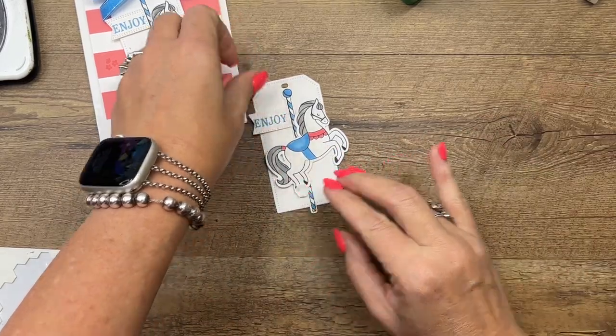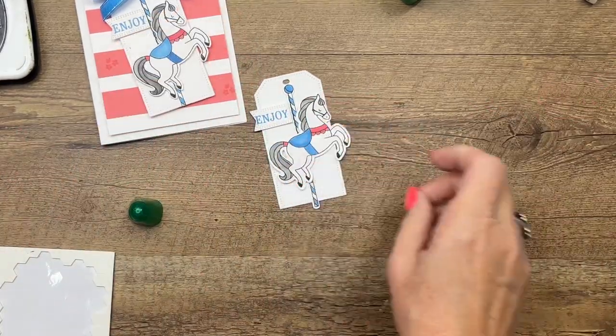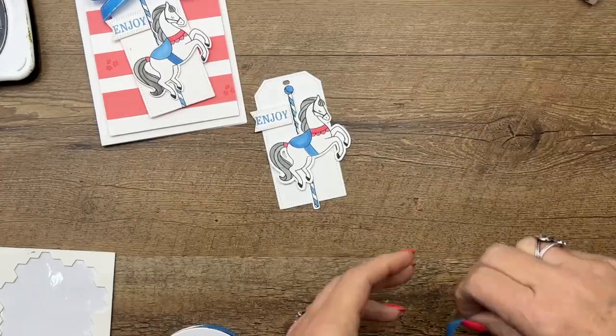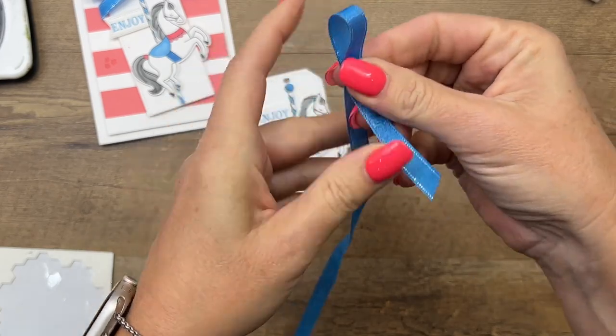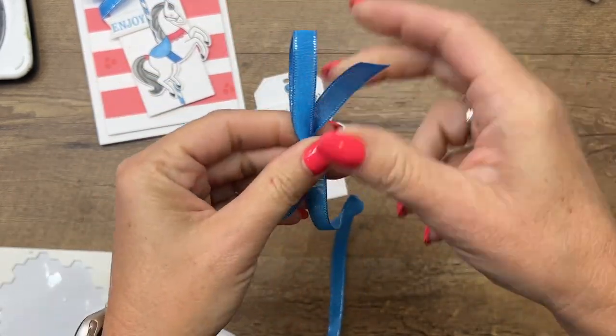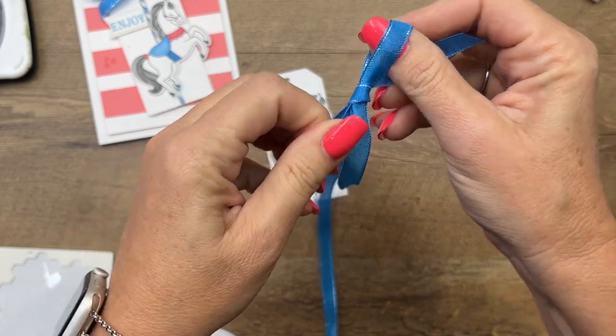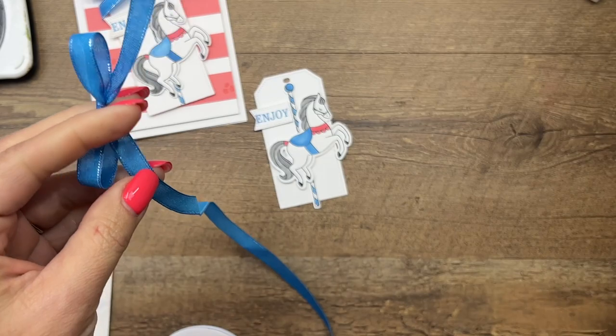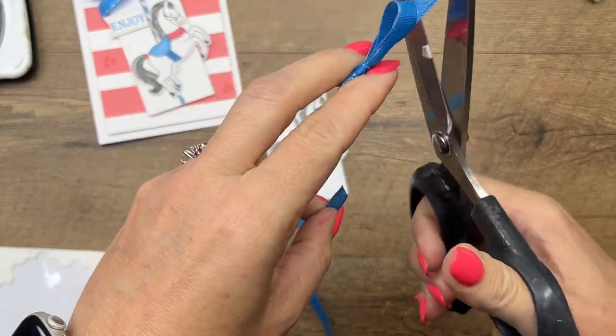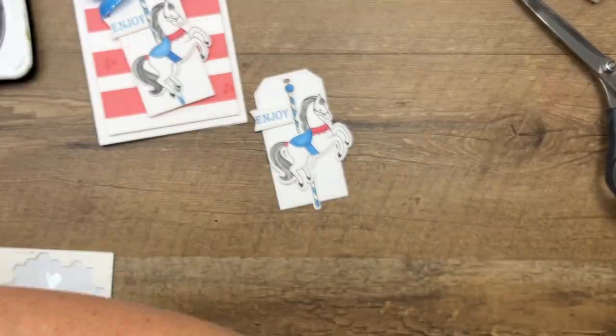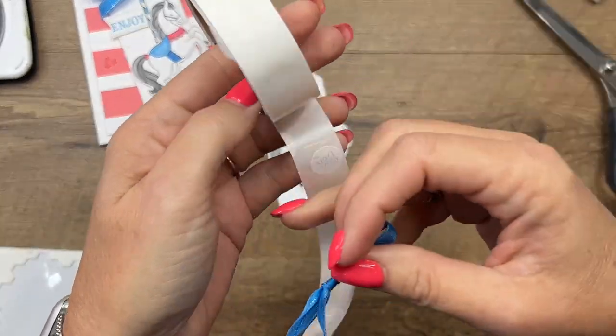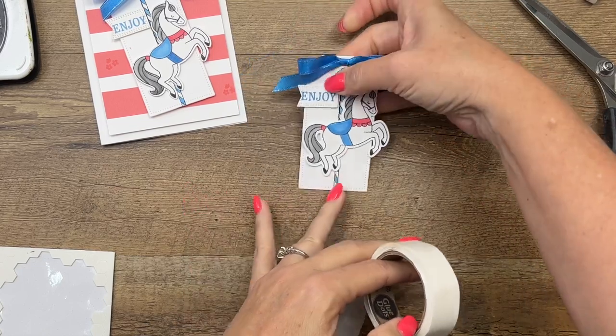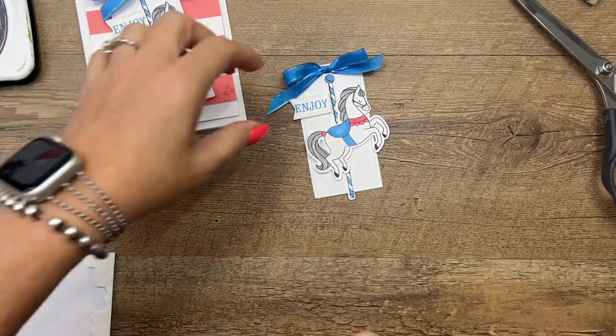Now we've got ribbon that perfectly matches our Azure Afternoon color. This ribbon comes in a three pack: Azure Afternoon, Bubble Bath, and Lemon Lolly, all three new lovely colors. Alright, snip your bow, grab a glue dot, and we'll put that right there at the top like that. Now let's snip off the end.